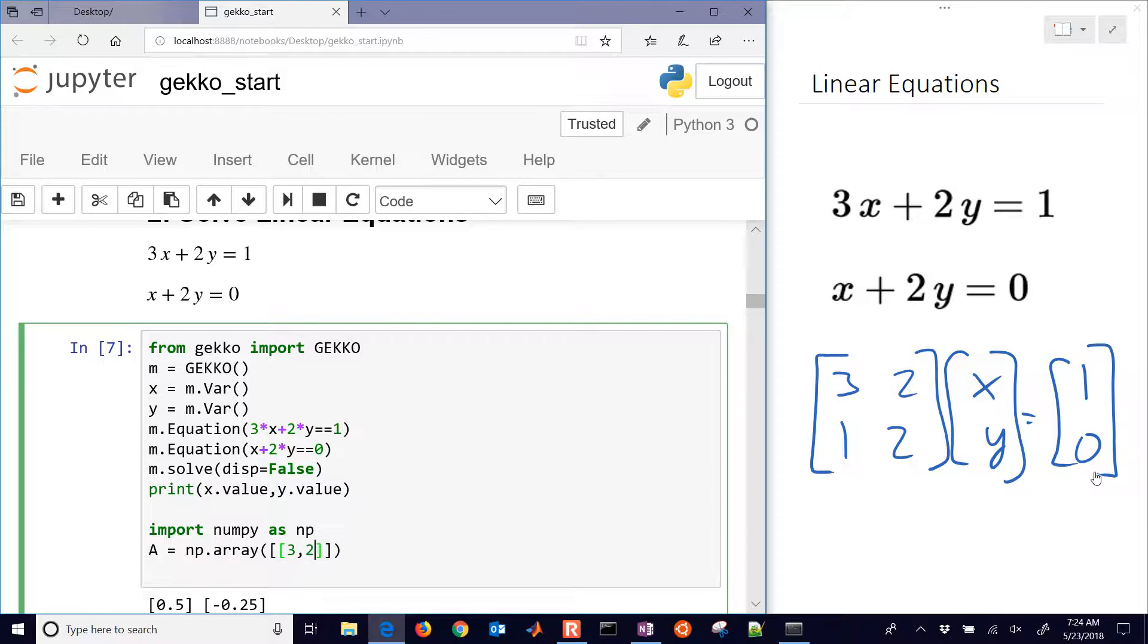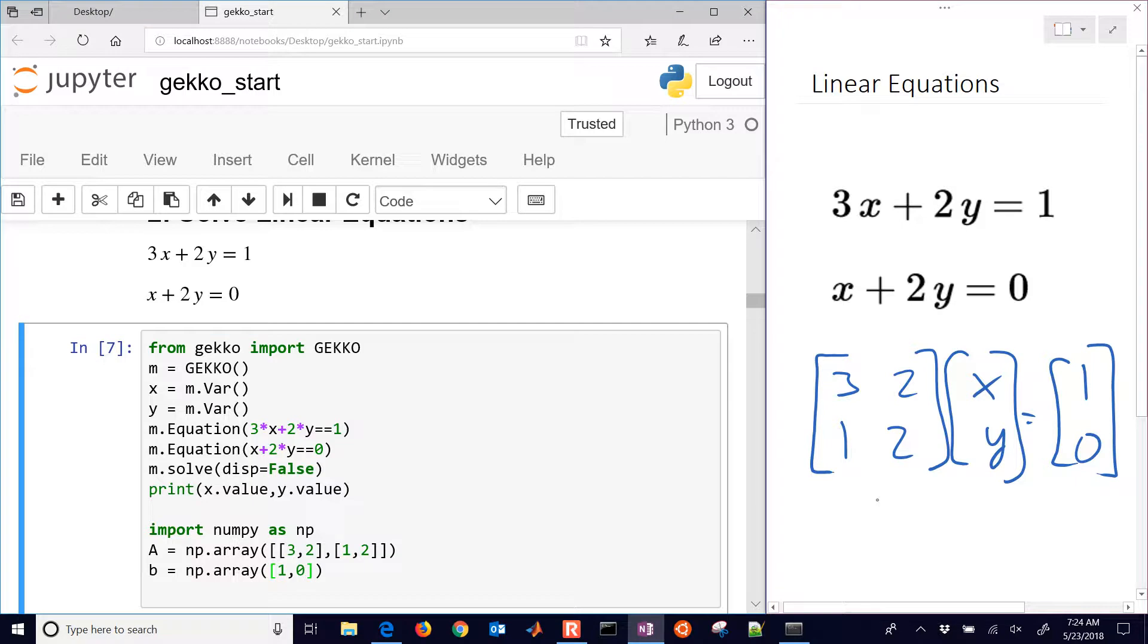And so we have 3, 2, and 1, 2. There's our first one. And I'll call this right-hand side, I'll call that b. And so we have 1, 0.